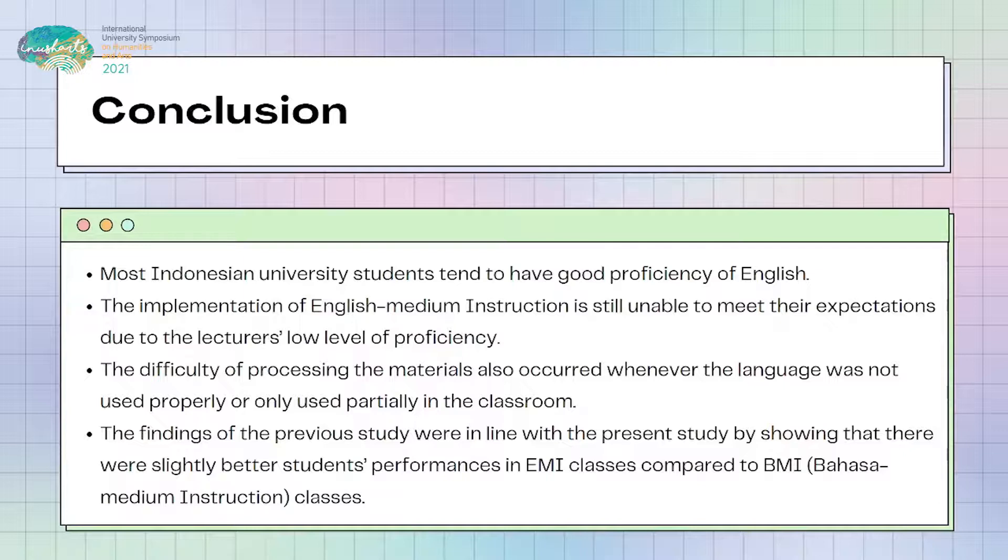In general, the findings of this study show that most Indonesian university students tend to have good proficiency of English that they feel comfortable to use the language during the lectures. However, the implementation of EMI is still unable to meet their expectations due to the lecturer's low level of proficiency. The difficulty of processing the materials also occurred whenever the language was not used properly or only used partially in the classroom. The findings of the previous study were in line with the present study by showing that there were slightly better students' performances in EMI classes compared to the BMI or Bahasa Medium Instruction classes.